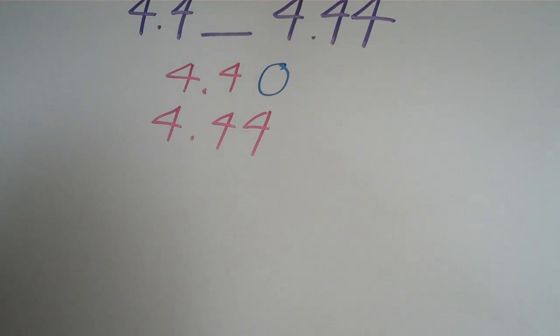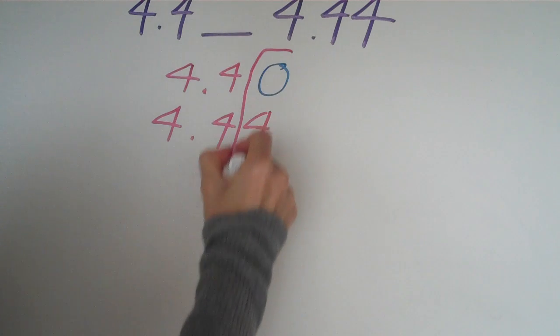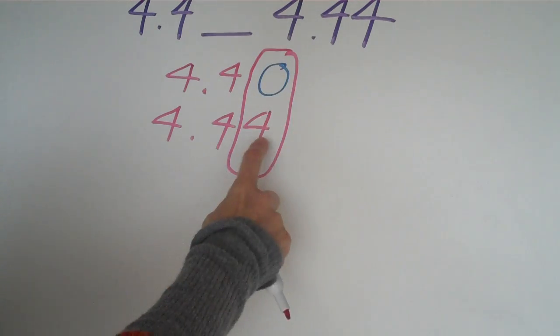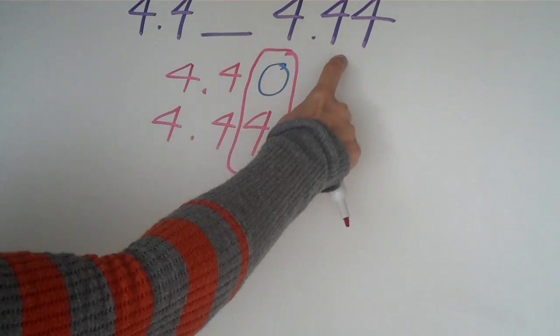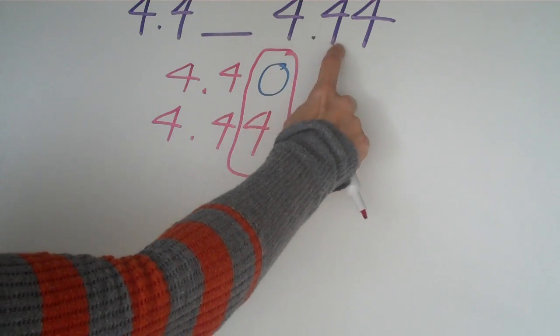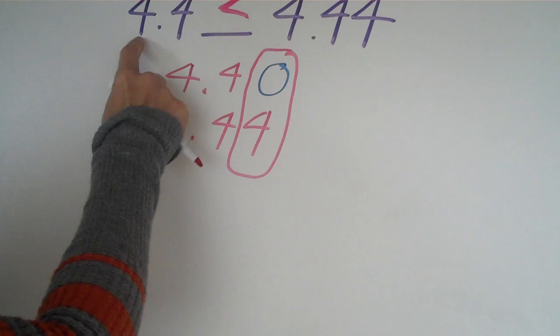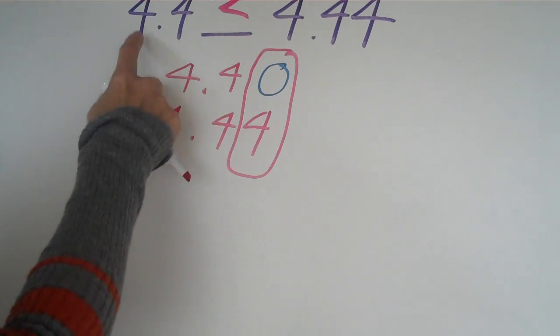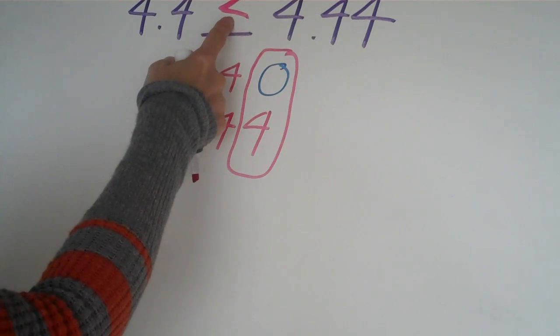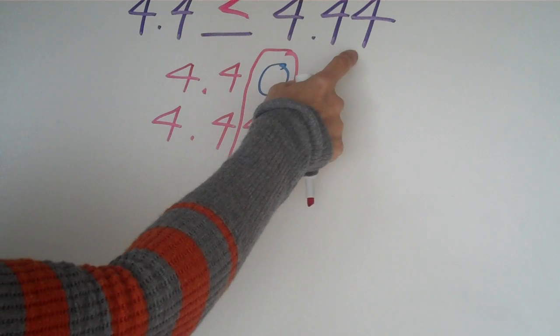And what's in this little spot right here is a 0. So you're just comparing these two numbers right here. So in that case 4 is greater than 0. So 4 and 44 hundredths would be greater than 4 and 4 tenths, or 4 and 4 tenths is less than 4 and 44 hundredths.